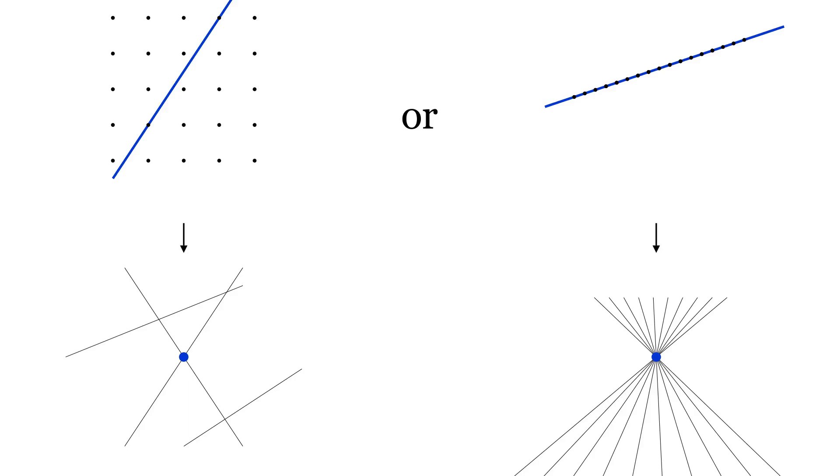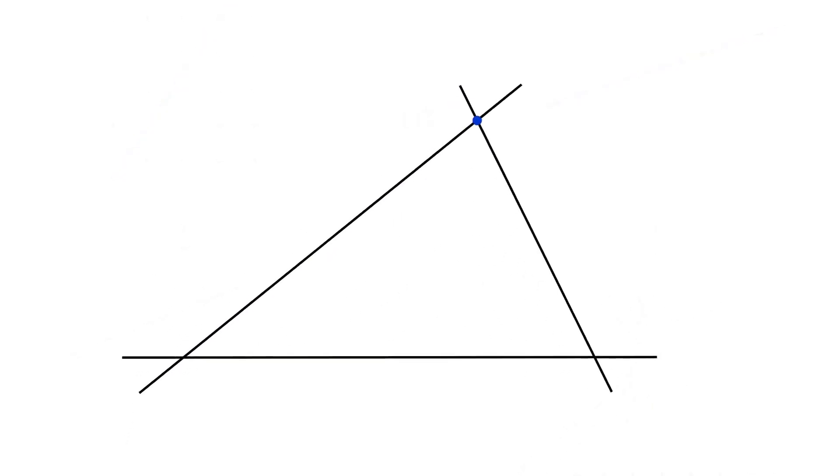The dual states that, given the finite set of lines in the plane, either all of them pass through one point, or there is a point where exactly two lines intersect. Assuming that not all lines pass through one point, choose an intersection point and a line that doesn't pass through it, so that the distance from this point to this line is the minimal possible out of all such point-line pairs. We will suppose that at least three lines pass through every intersection point, and use this to find a point-line pair with even smaller distance, resulting in a contradiction.